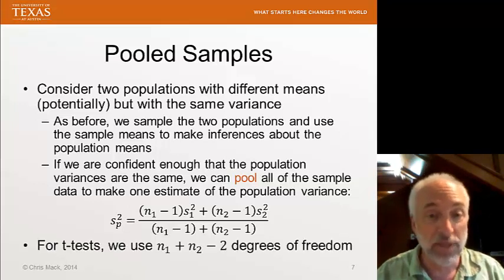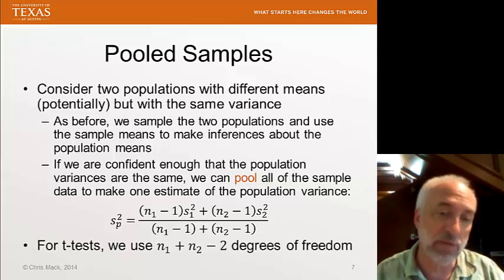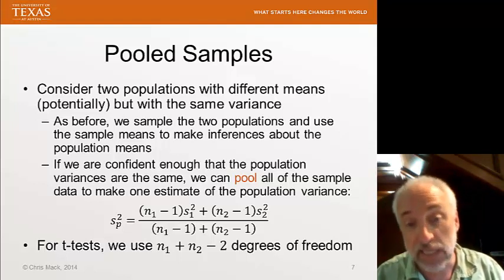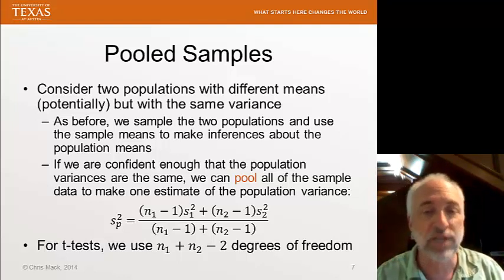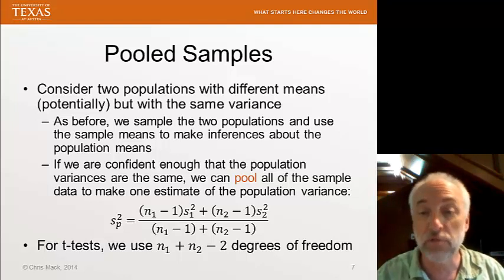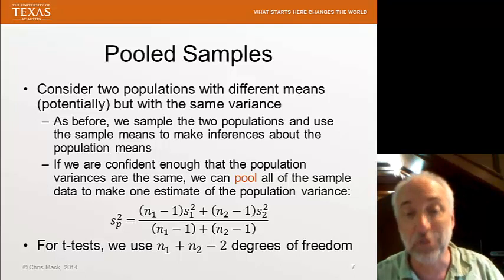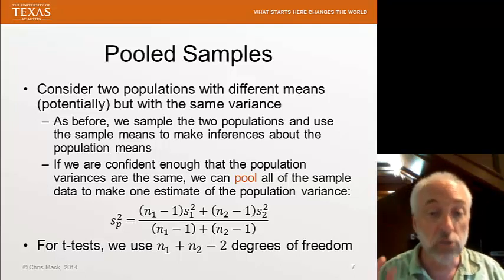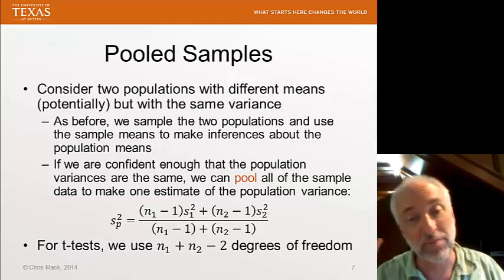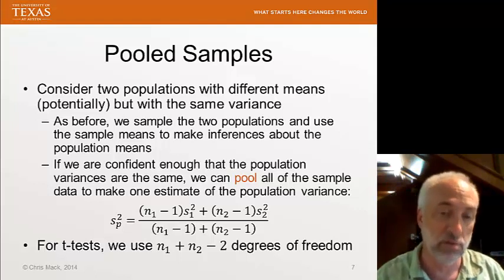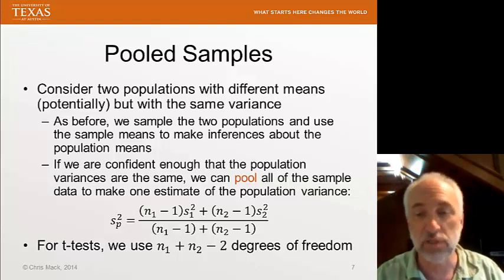Now, by the way, if I'm going to use this to do t-tests, that is, if I have small sample sizes, the number of degrees of freedom for the t-test will be n1 plus n2 minus 2, that is, the total size of the sample minus 2 because I'm calculating two means. And that reduces my degrees of freedom by 2.